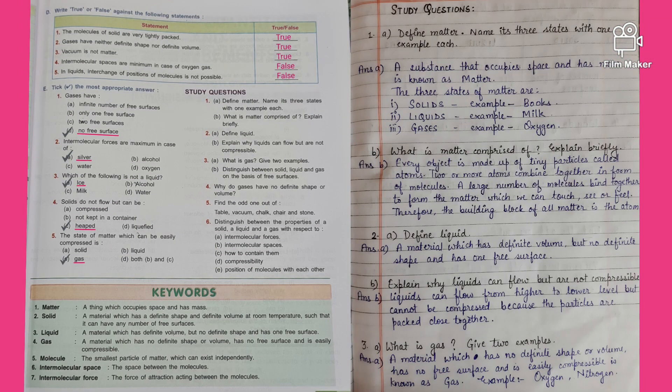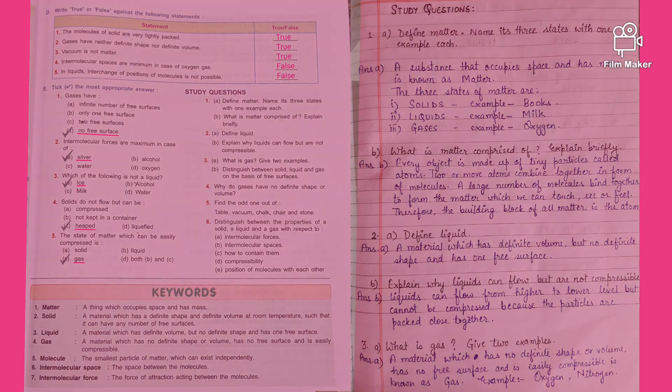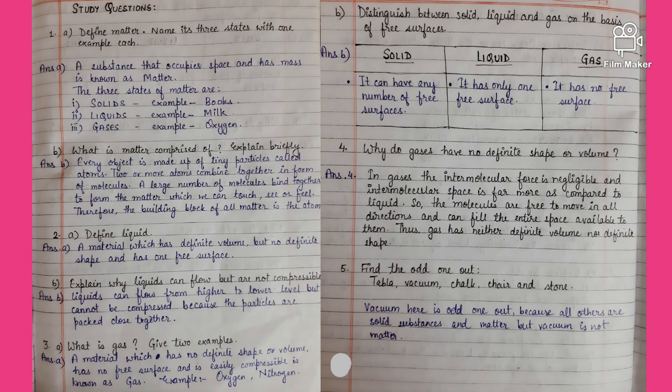Question number B — that is, statements given below are incorrect, write correct statements — has been solved. The study questions on the next page have also been solved.